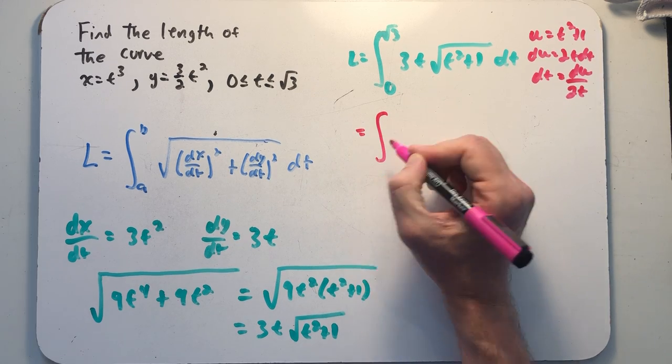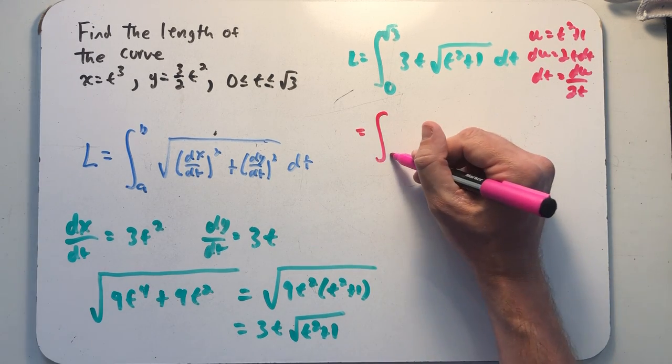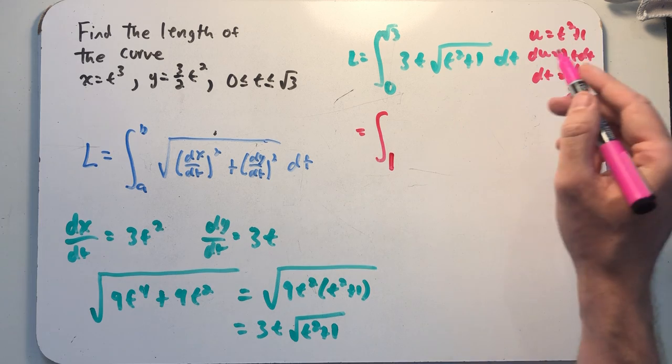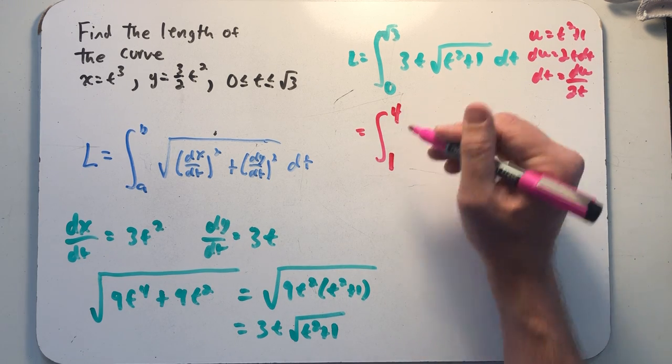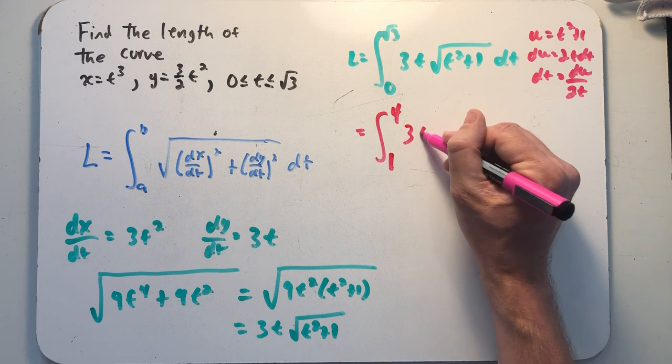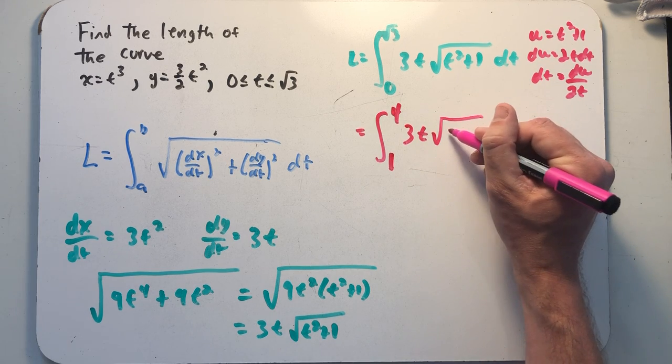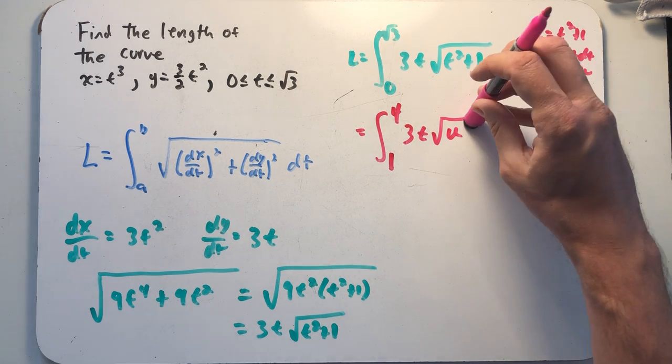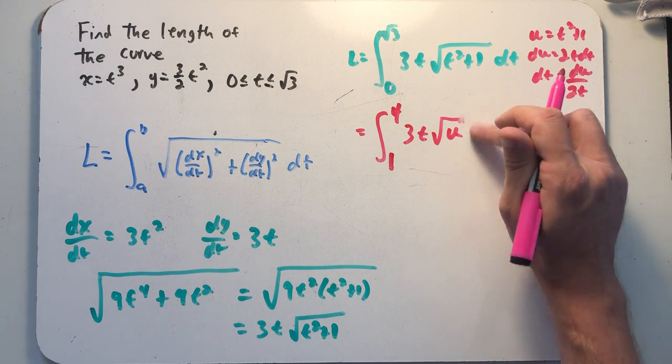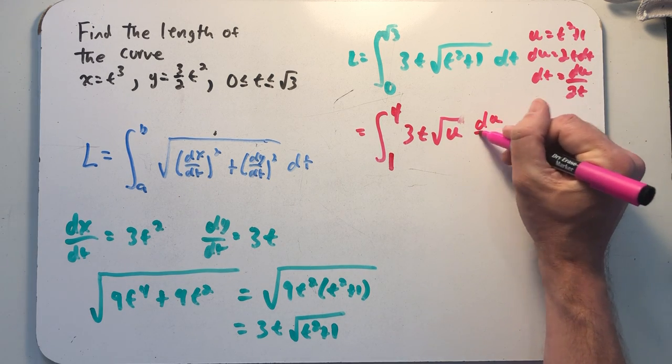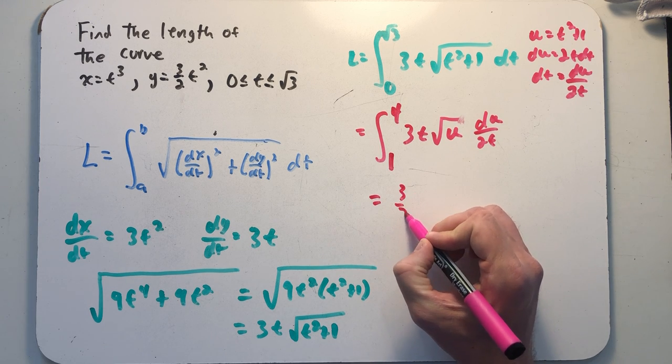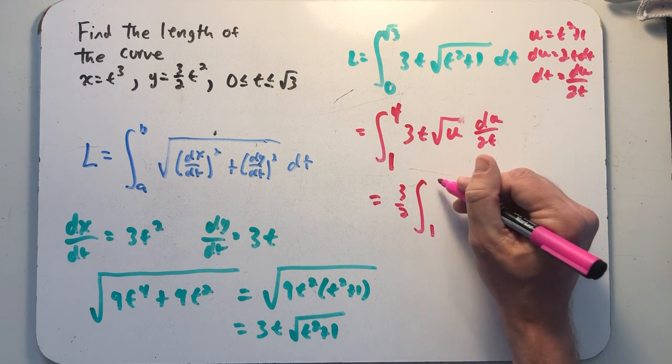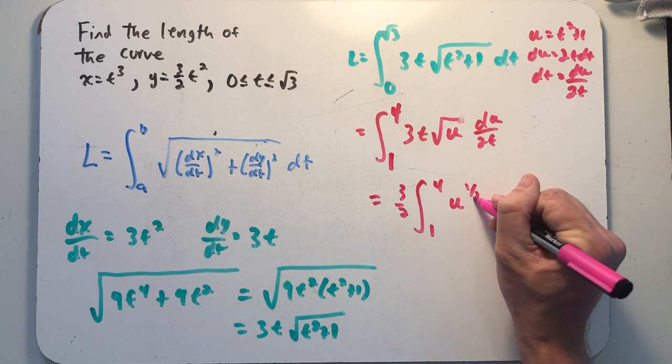All right, I'm going to change my bounds, plug in a 0 for t and u is equal to 1, plug in a root 3, and that top bound is going to be 4. I have 3 times t times the square root of u, and then du over 2t. The t's cancel. I have a 3 over 2 I can set out front of my integral. And now I'm just integrating u to the 1 half.